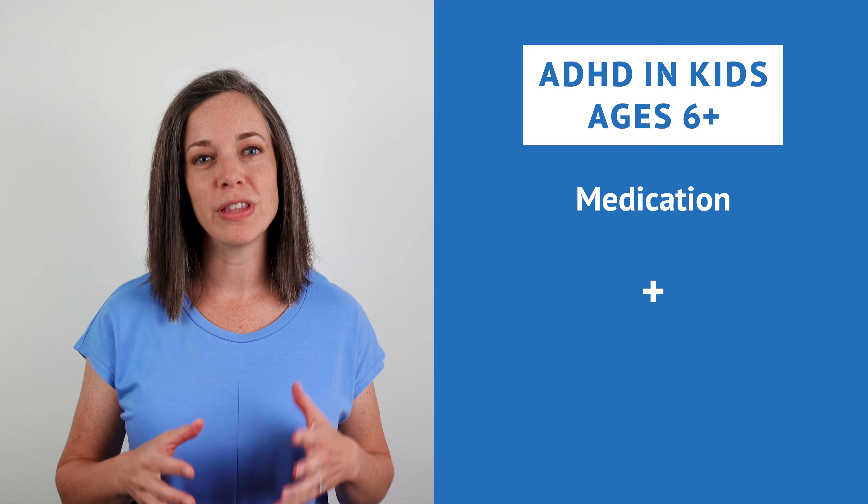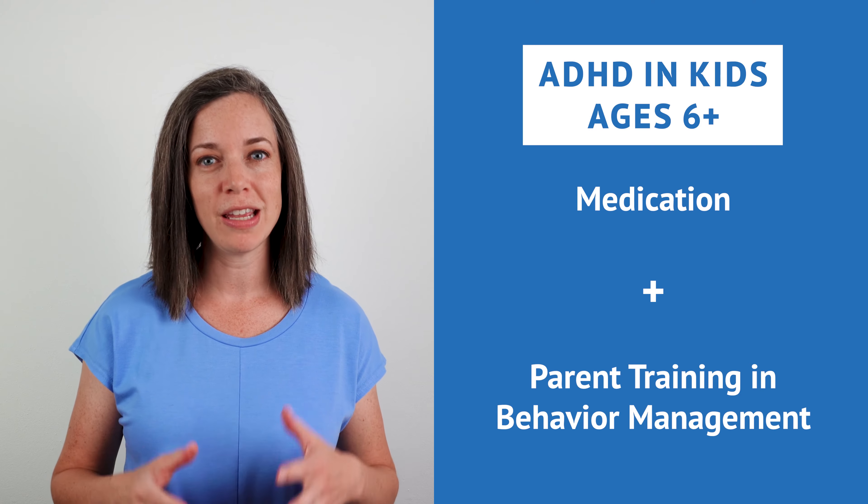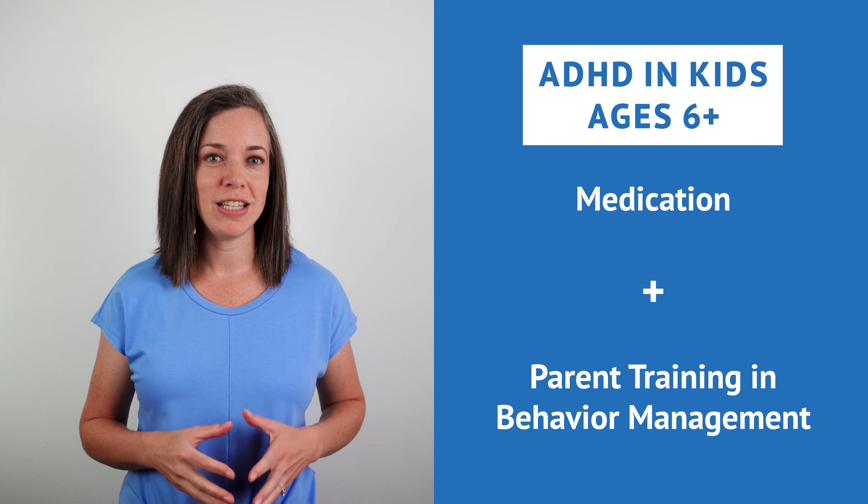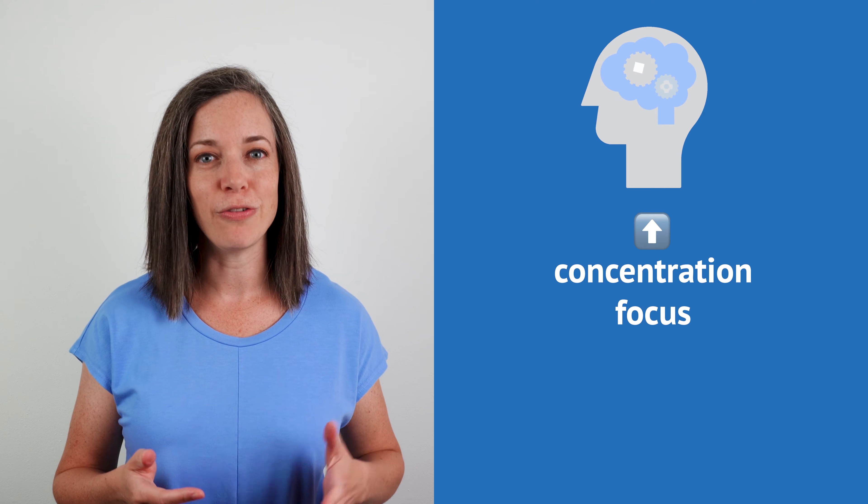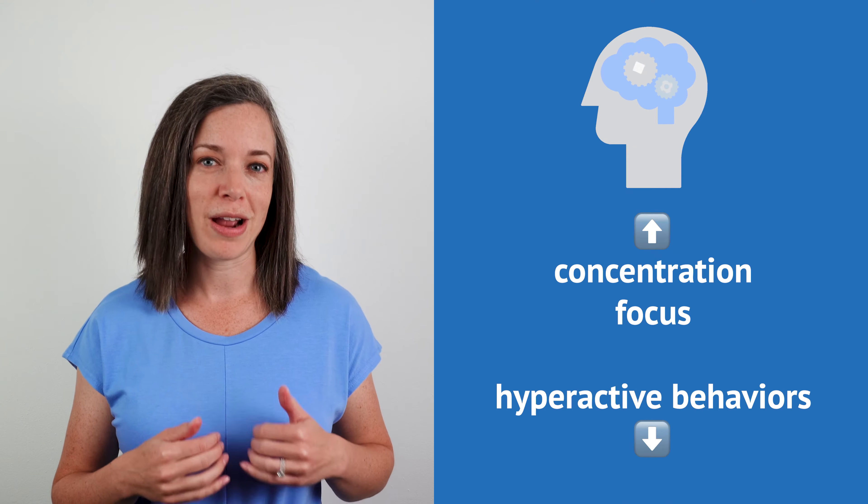The current gold standard treatment for ADHD in kids 6 and older is a combination of medication and a type of therapy called parent training in behavior management. In ADHD, it's thought that lower levels of two brain chemicals, dopamine and norepinephrine, play a role. Medications work to increase these neurotransmitters in the brain, improving concentration and focus, and lowering more hyperactive behaviors.